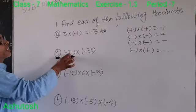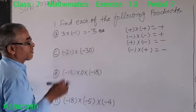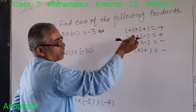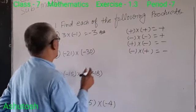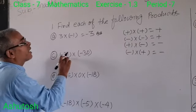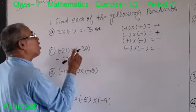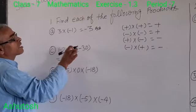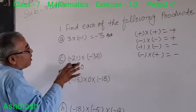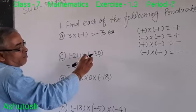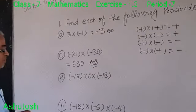Next question, question number C: minus 21 into minus 30. Here minus into minus. We see that minus into minus is equal to plus. So minus into minus gives plus, and 21 into 30 gives 630.